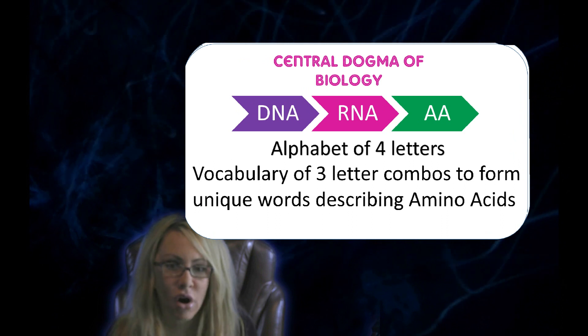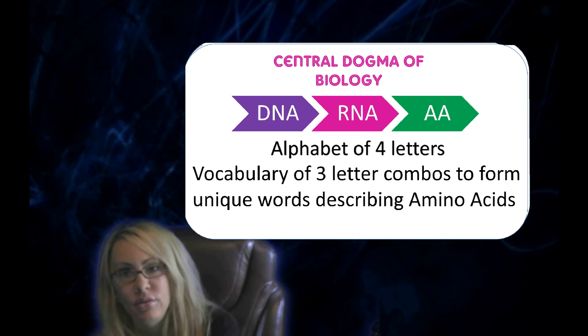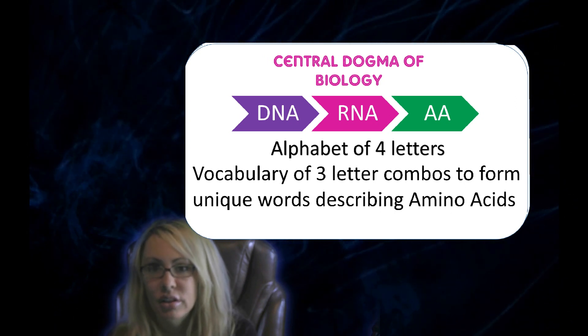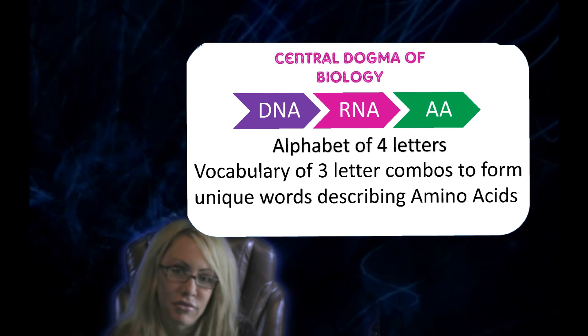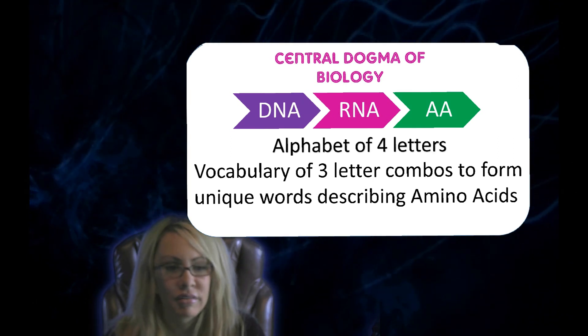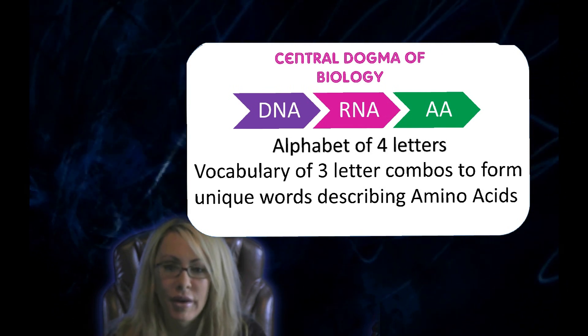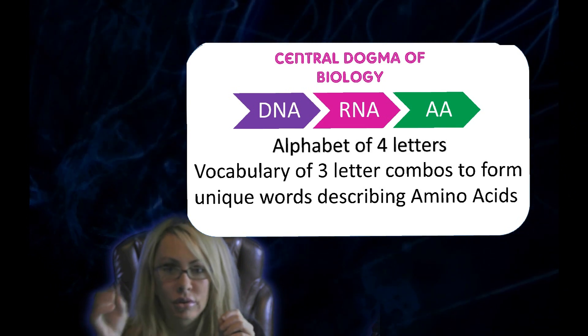The central dogma of biology is how information flows from DNA to RNA to the protein. We go from DNA to RNA to protein. Proteins are going to be the outward expression of the genes in DNA. So this is how our information flows. Let's talk about the genetic code.